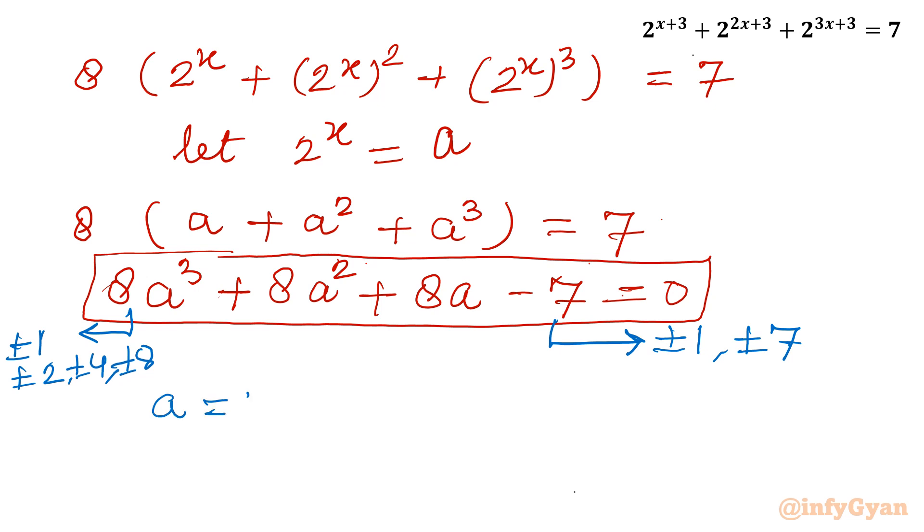So those solutions are eligible solutions. I am straight away putting the value of a. If a = 1, see what will come out. 8 + 8 + 8 - 7, no, it is not a solution. a = -1, so -8 + 8 - 8 - 7, so it is not coming out zero, rejected.